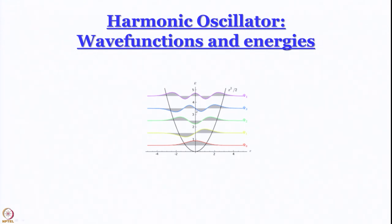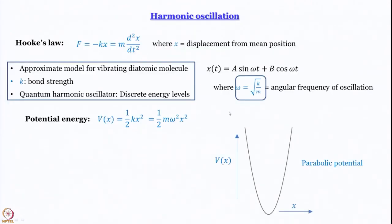Today let us go ahead and see how one can arrive at the expression of the energies and at least one of the wave functions. But before that, let us do a brief recap. We have said that harmonic oscillators are those which obey Hooke's law. In the classical domain, the solution for x, the displacement from mean position, would be a·sin(ωt) + b·cos(ωt), where ω is the angular frequency of oscillation.